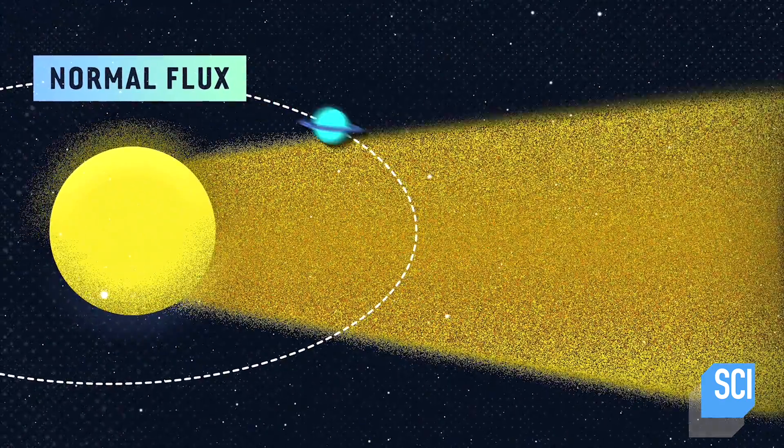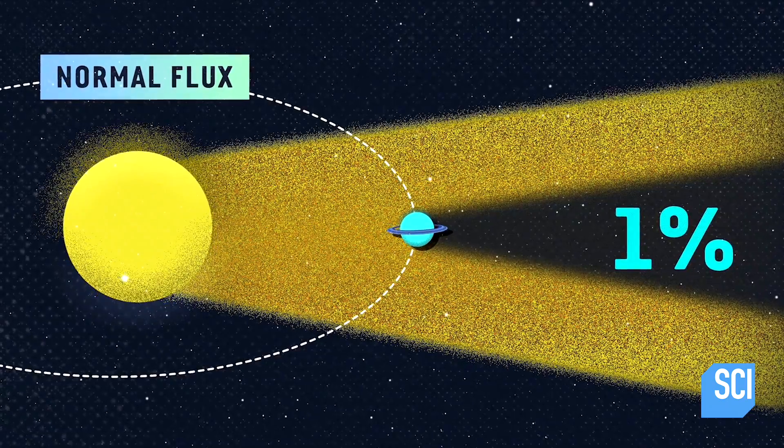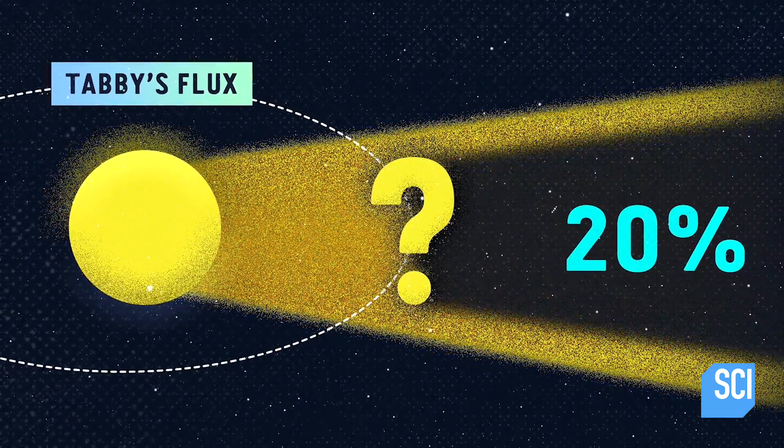Normally, scientists see a 1% flux in light from a star when a planet crosses in front of it. But whatever's crossing in front of Tabby's star is creating a 20% flux.